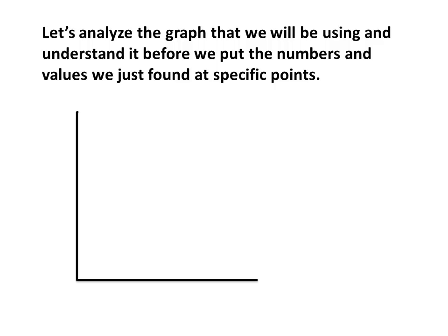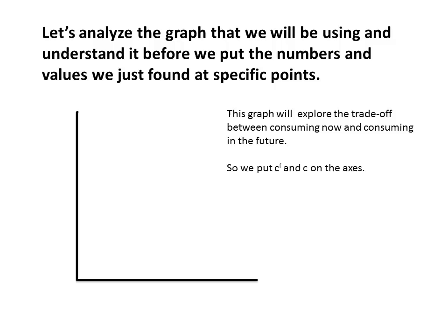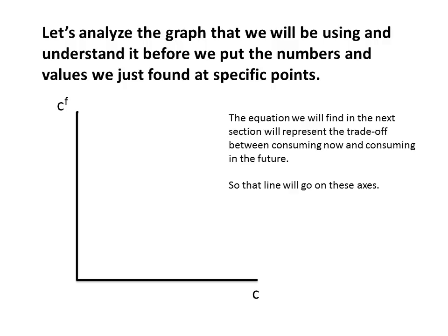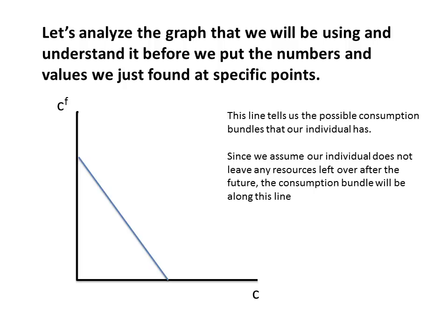Let's analyze the graph we're going to be using. I want to really understand the theory behind it before we put numbers on the axes and find the slope. The graph is going to explore the tradeoff between consuming now and consuming in the future, so we're going to put future consumption and current consumption on the axes. On the y-axis we have future consumption, and on the x-axis we have current consumption. The equation we'll find later represents the tradeoff between consuming now and consuming in the future. It shows us all possible consumption sets — our opportunity sets — and that line is going to fall on these axes.